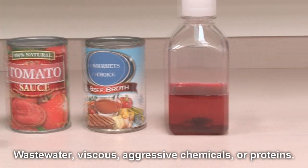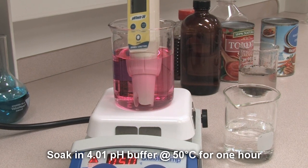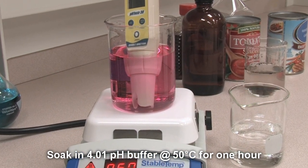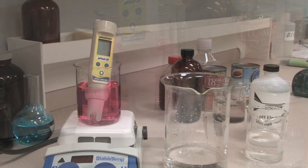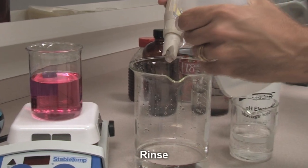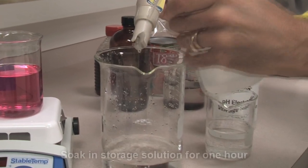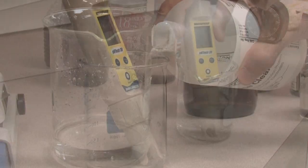Soak the electrode in a 4.01 pH buffer solution heated to 50 degrees Celsius for one hour. Allow the buffer to cool down to room temperature, then rinse the electrode with deionized or distilled water and soak for one hour in storage solution.